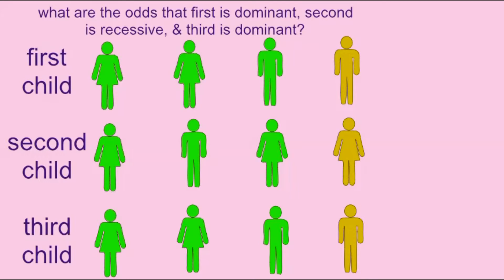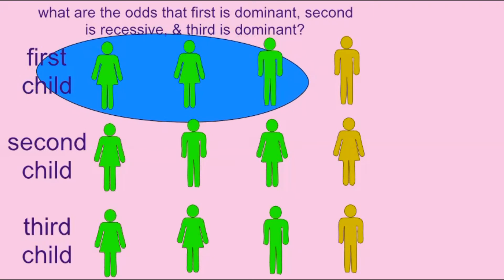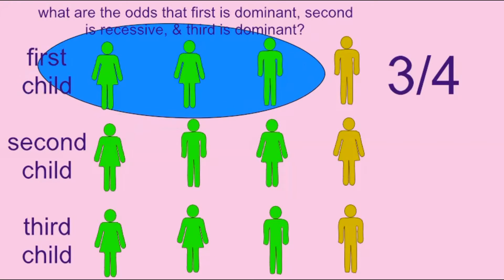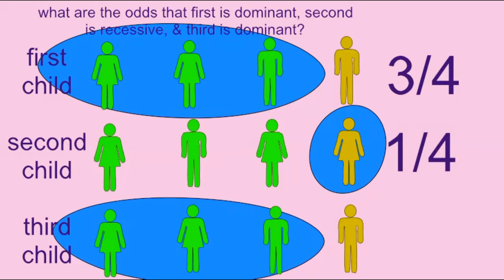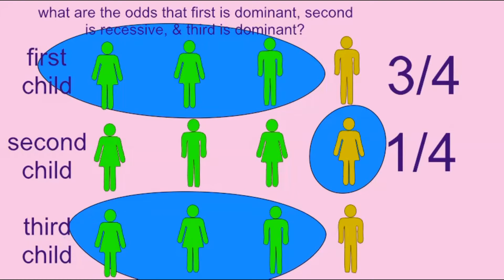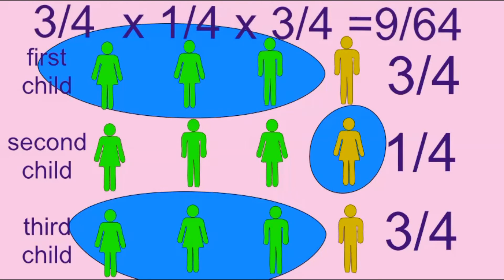Other combinations of children could simply be found by multiplying the appropriate odds for each child. For example, if one asked what are the odds that the first child has a dominant trait, the second child has the recessive trait, and the third child has the dominant trait, one would multiply three quarters — the odds that the first child has the dominant trait — by one quarter, the odds that the second child has the recessive trait, by three quarters, the odds that the third child possesses the dominant trait. This would give a probability of 9 over 64.